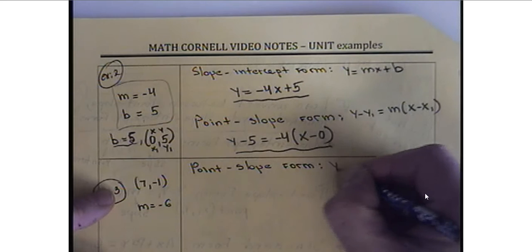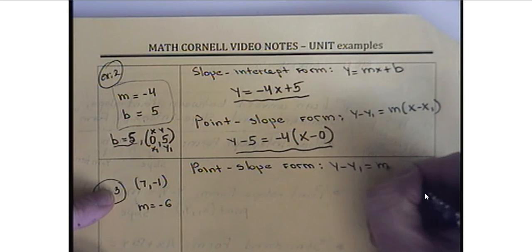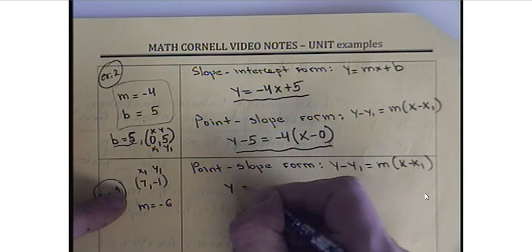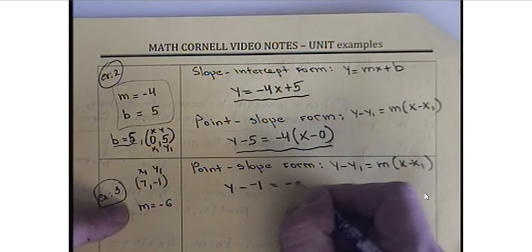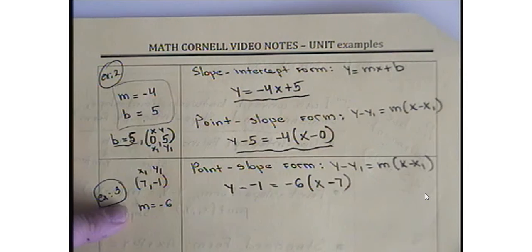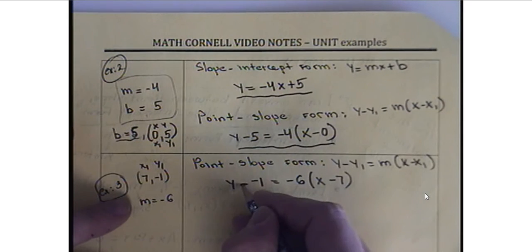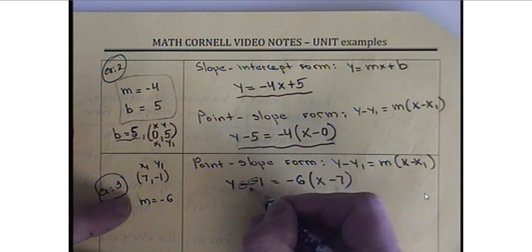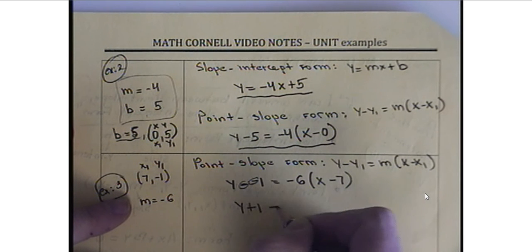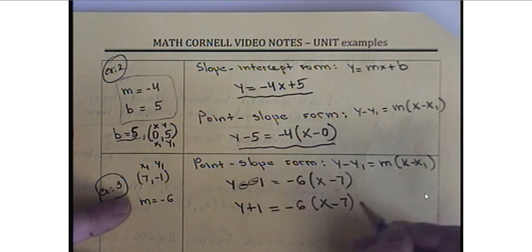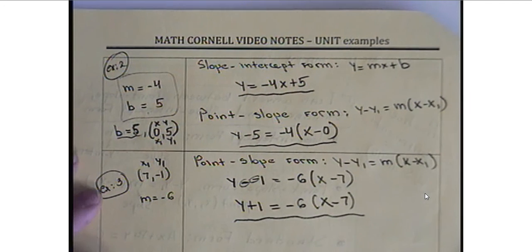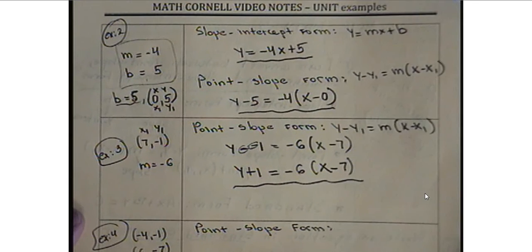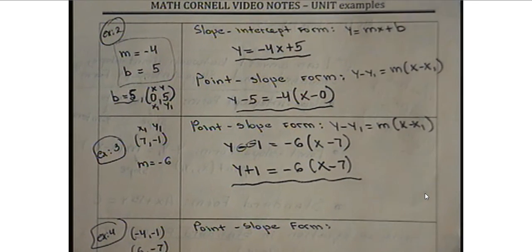Point-slope form again: y minus y1 equals m times x minus x1. We go ahead and substitute: y minus negative 1 equals negative 6 times x minus 7. I did that on purpose to show you that the negative sign from the formula and the negative sign from the number 1 combine — two negatives change to plus, giving y plus 1. Always simplify this when you have multiple choice questions to get the right answer. Be careful with two negative signs; that's always a potential problem when choosing from a list of answers.